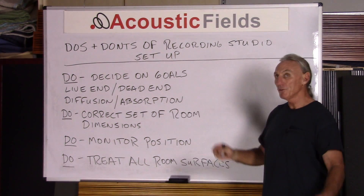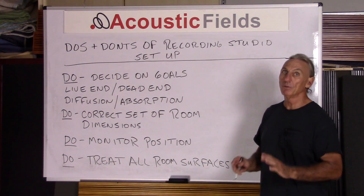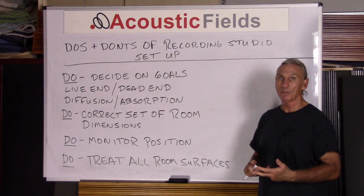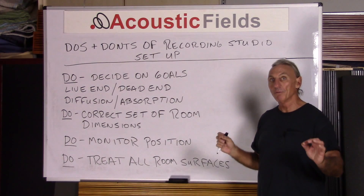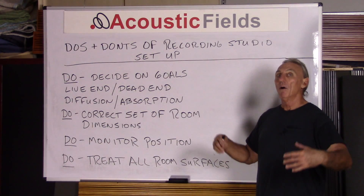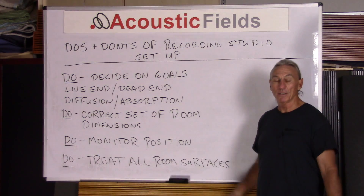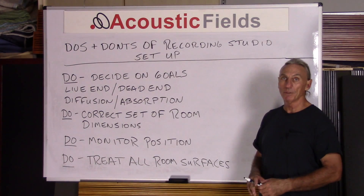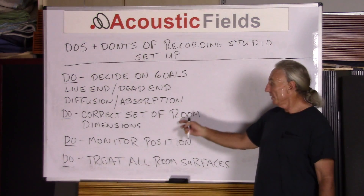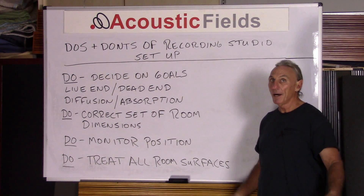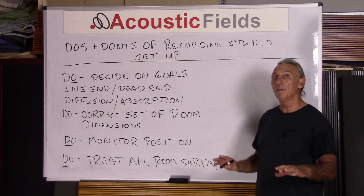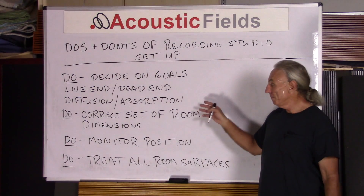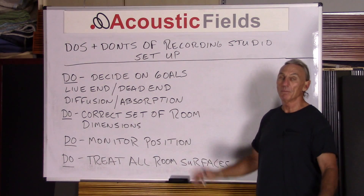Secondly, do find the correct set of dimensions. There is a length, width, and height ratio that's critical to minimizing low frequency energy issues within your room. Almost any room, regardless of size — unless you get into 30, 40, 50 foot dimensions — is going to have some kind of low frequency issue. Can we resolve all those issues by correctly identifying the width, height, and length? No, but we can minimize the impact low frequency pressure issues have. We can find a good set of dimensions that will minimize those.